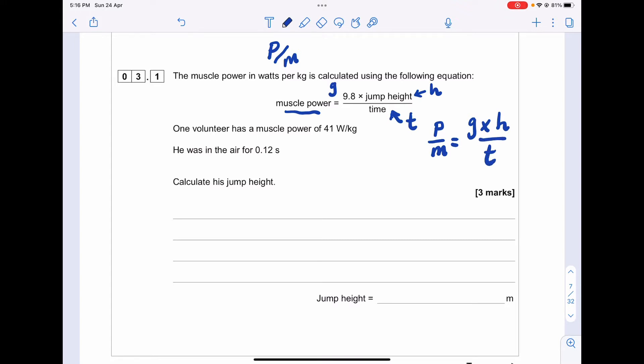One volunteer has a muscle power of 41 watts per kilogram and the time taken in the air was 0.12 seconds. Calculate his jump height. So 41 equals 9.8 times h divided by 0.12. Therefore h equals 41 times 0.12 divided by 9.8, which gives a jump height of 0.50 meters. Three marks.